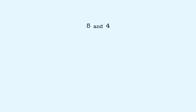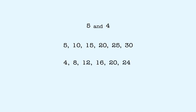We can also find the least common multiple of two numbers without using a number line. Here's an example: 5 and 4. First, we list several multiples of 5 in order. Now we list several multiples of 4 in order. We can see that there's a common multiple, which is 20. Since this is the smallest number that's a multiple of both 5 and 4, this is the least common multiple.